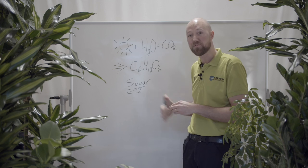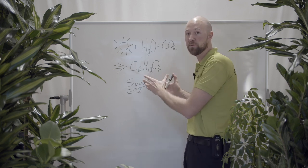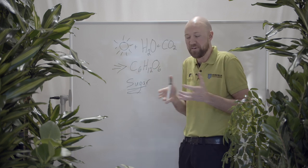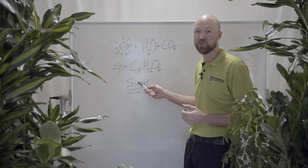C6H12O6. We get sugar. Now this, the glucose, this is the food for the plant. If we want our plant to grow, get bigger, get thicker, this is what the plant needs to eat.